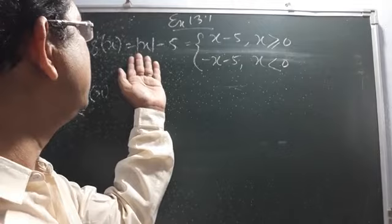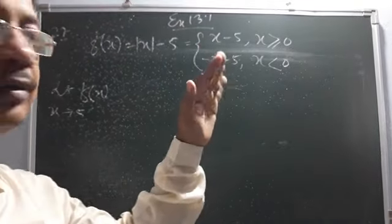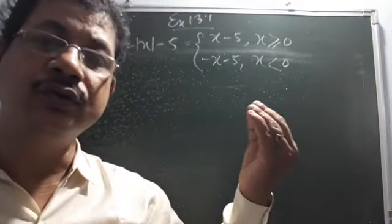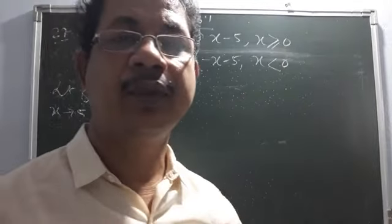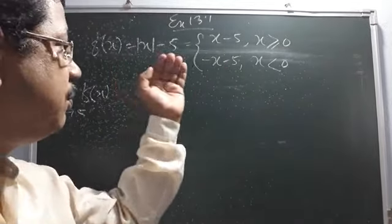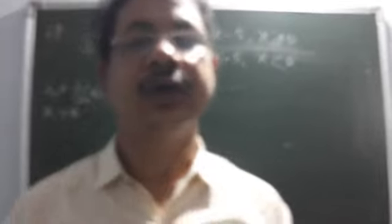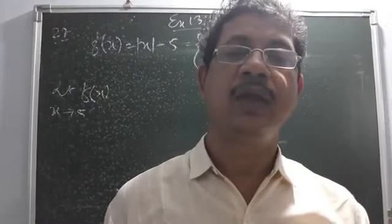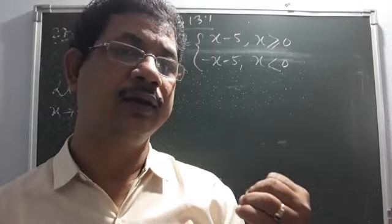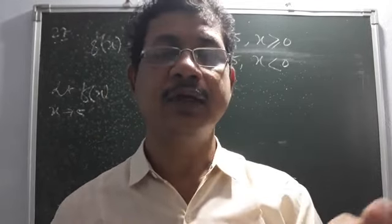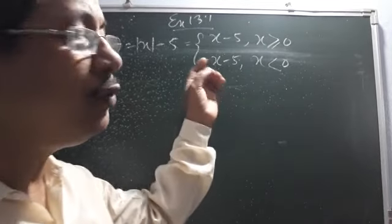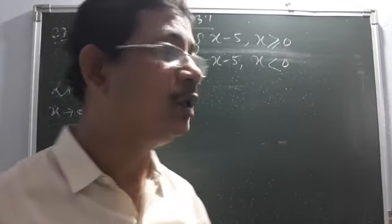The logic behind this: if x is 0 or positive, modulus has no effect — you can write x instead of |x|. But suppose x is less than 0, that is negative. If we put −2 inside the modulus, it becomes +2. The modulus gives another minus, making it positive. So if it is negative, we put a minus before it to make it positive. That is the technique.